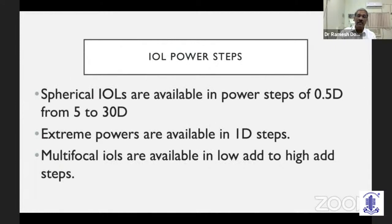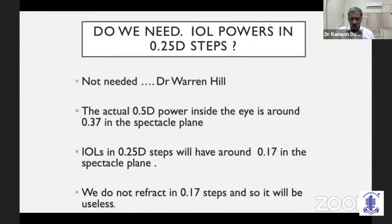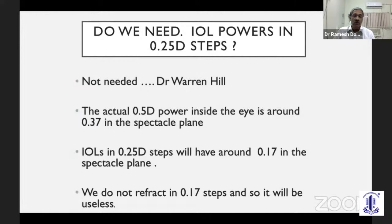The last part of my topic is on IOL power steps. We are all aware that power steps come in 0.5 diopters in the usual ranges, and in extreme powers they are available in steps of 1 diopter. Toric lenses are usually available between 1.5 and 6 diopter in 0.75 diopter steps. A small group of vocal surgeons believe we should get intraocular lenses in 0.25 steps. However, Dr. Warren Hill strongly feels that with current technology it is not needed, because the effective power of a 0.5 diopter lens step in the spectacle plane is only 0.37 diopter, and a 0.25 diopter step would translate to 0.17 diopter in the spectacle plane — below the resolution of our refraction.